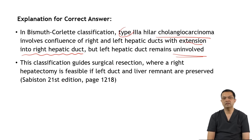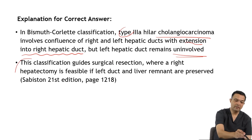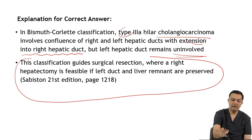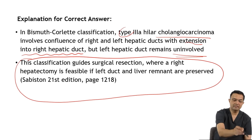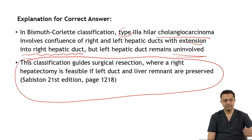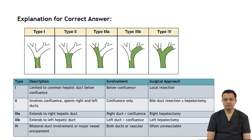Bismuth-Corlette classification guides surgical resection. A right hepatectomy is feasible if the left duct and liver remnant is preserved. So if the liver remnant is good and if the left duct is uninvolved, we can plan right hepatectomy.